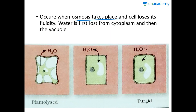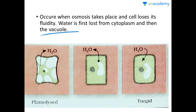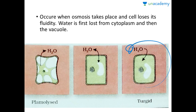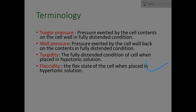Plasmolysis occurs when osmosis causes a cell to lose its fluidity — water is first lost from the cytoplasm and then from the vacuole. Looking at the NCERT diagram, three conditions are shown: plasmolysis (cell placed in hypertonic solution), isotonic (same water concentration inside and outside), and the condition where the external solution is more dilute (hypotonic), where water moves into the cell.